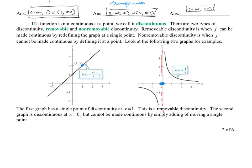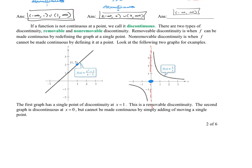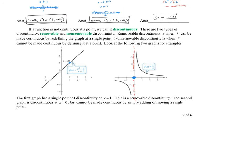The first graph has a single point discontinuity at x equals one — this is a removable discontinuity. The second graph is discontinuous at x equals zero but cannot be made continuous by simply adding or moving a single point, so that is called a non-removable discontinuity.